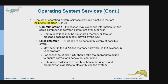Then we have error detection. The OS needs to be constantly aware of possible errors. Errors may occur in the CPU, in the hardware, or in the user program — referred to as software or application. For each type of error the OS should take appropriate action to ensure correct and consistent computing, and provide debugging facilities for users and developers. For example, in Windows you can press Ctrl+Alt+Delete to go to the Task Manager and terminate a program if there is some error.